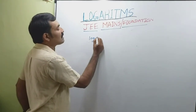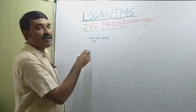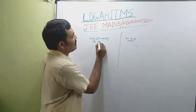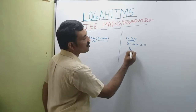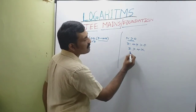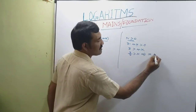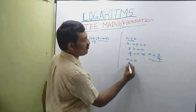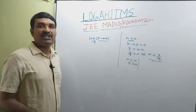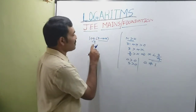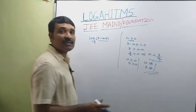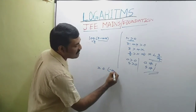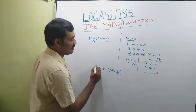Now log of (3 - 4x) to the base 5. Find the value of x for which this function is defined. First condition: n > 0, so 3 - 4x > 0, giving x < 3/4. The base is 5: 5 > 0 and 5 ≠ 1, so all conditions are satisfied. Therefore x ∈ (-∞, 3/4).